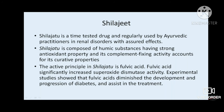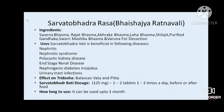The preferred rasayana following Pipali Mulyadi Paniyam is Shilajit. It is a time-tested drug very useful in renal disorders, possesses antioxidant property and complement-fixing activity. The active principle of Shilajit is fulvic acid, which is found to increase superoxide dismutase activity — this is the antioxidant effect of Shilajit. Experimental studies show that fulvic acid diminishes the development and progression of diabetes.